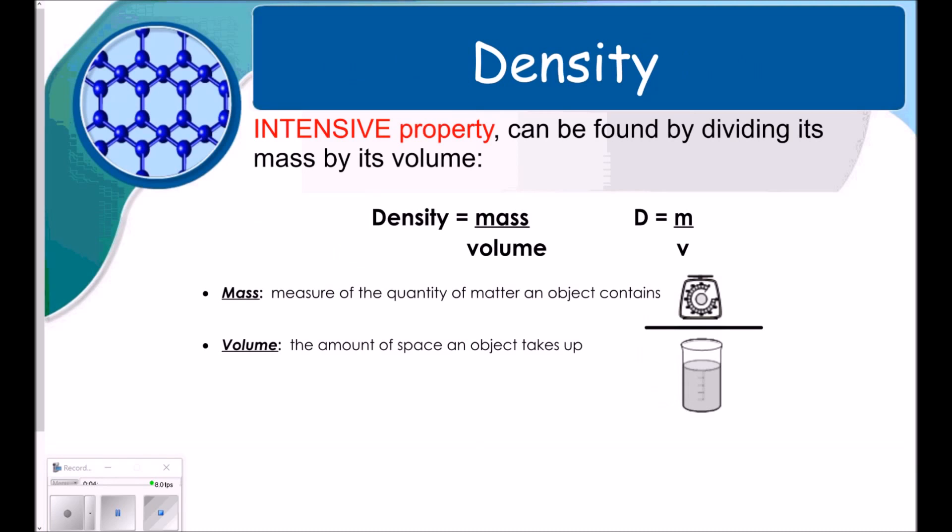Next, I want to talk a little bit about density. Density is an intensive physical property. And it can be found by dividing mass by volume. This is an equation I will give you on your test. You do not have to have it memorized, but you need to know how to manipulate it. So, mass. It's the measure of the quantity of matter an object contains, whereas the volume is the amount of space it takes up.